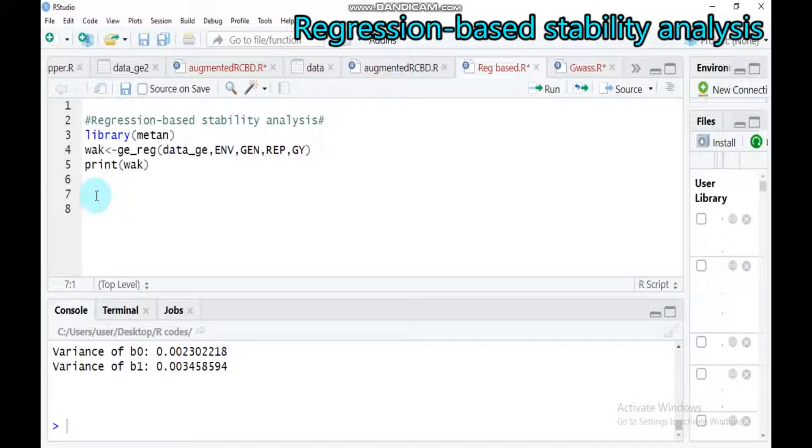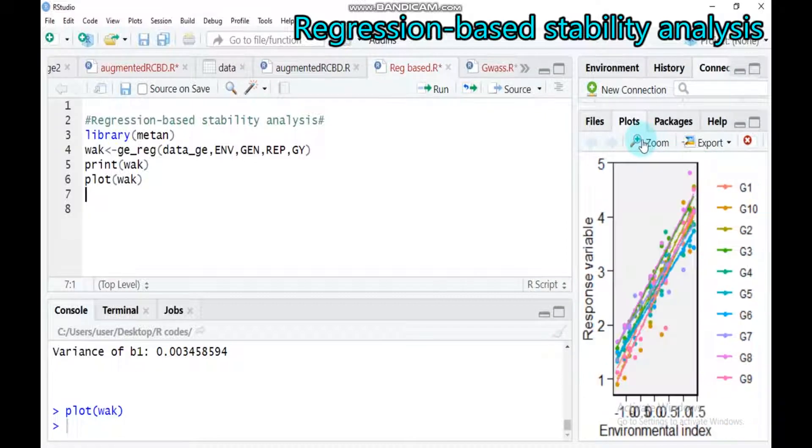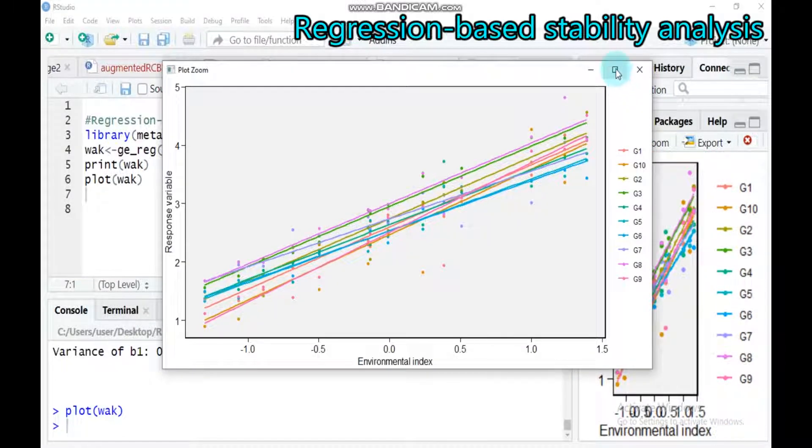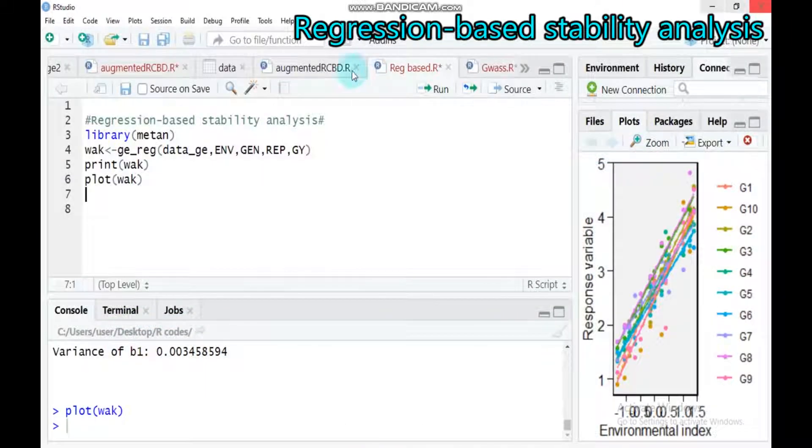Furthermore, if you want to check using the plot, you can type plot and also the name wac to display the graph. By this way, you can also visualize the yield response variable versus the environment index. You can visualize your stable genotype using the graph.